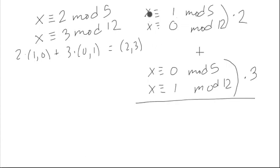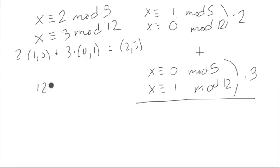So all we have to do is solve this first system and that second system. How do we solve the first system? We need to find something that is 0 mod 12. Well, that would just be something that's a multiple of 12, so let's take 12 itself. But it also needs to be 1 mod 5. 12 is not 1 mod 5, but let's multiply 12 by something. If we do that, it's still a multiple of 12, so we're still satisfying the bottom equation. So let's multiply 12 by something so that whatever we get is 1 mod 5. That's the inverse of 12 in mod 5 arithmetic.